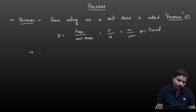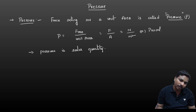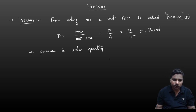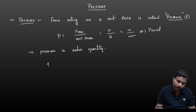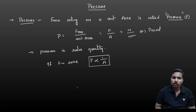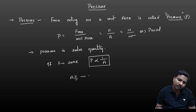Pressure is a scalar quantity — that means it does not depend on direction. We will discuss why it is a scalar quantity on the next page. Also, if the force is the same (constant), then pressure is inversely proportional to the area of contact.